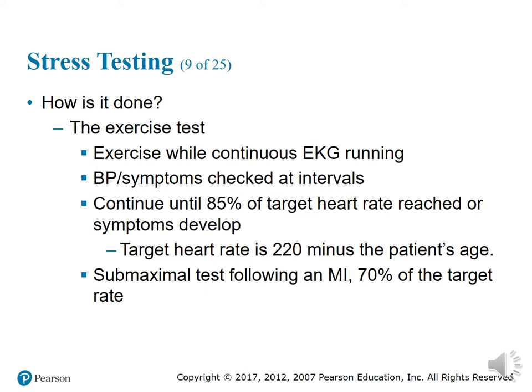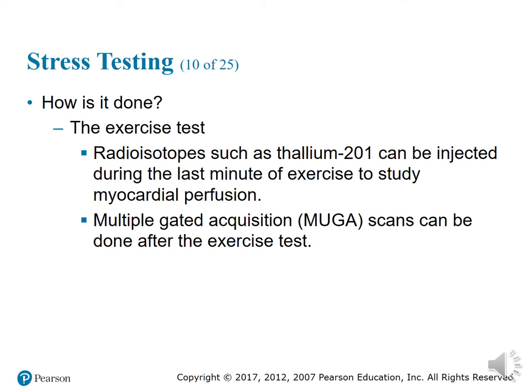During the exercise test, the EKG runs continuously while blood pressure and symptoms are checked at intervals. The test continues until 85% of the target heart rate is reached or symptoms develop. The target heart rate is 220 minus the patient's age. For a submaximal test following an MI, the target is 70% of the target heart rate, just to gauge where they are in their recovery process.